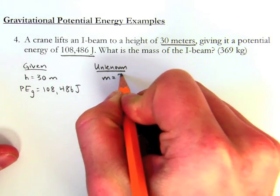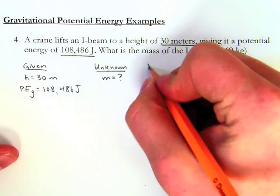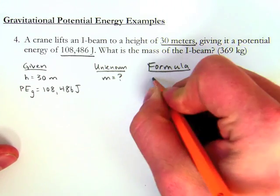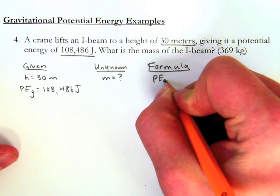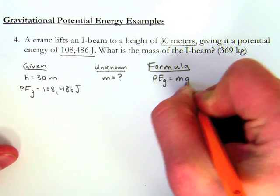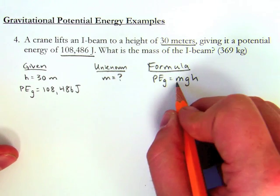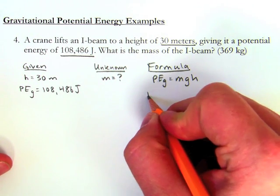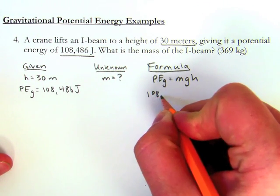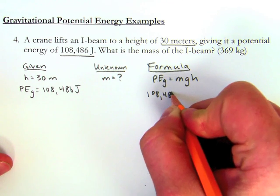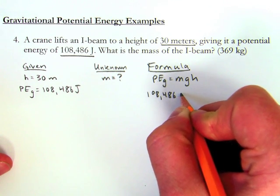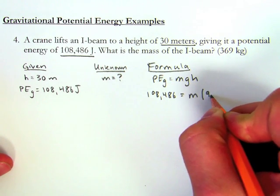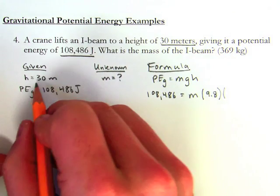What is the mass of the I-beam? As I write down my formula, I know that potential energy due to gravity is mgh - mass times gravity times height. There's the mass I'm looking for. I have potential energy due to gravity is 108,486 joules, which equals the mass times gravity, which is 9.8 here on Earth, times the height, which is 30 meters.